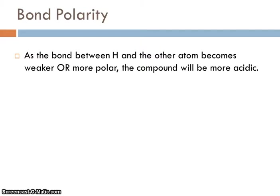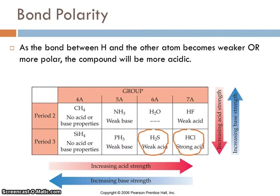One of the important things that affects the strength of an acid is the polarity of the bond between the hydrogen and whatever it's attached to. As that bond becomes either weaker or more importantly more polar, the compound is going to end up being more acidic. If we look at H2S and HCl, the H-S bond is not as polar as the H-Cl bond. H2S is a weak acid; HCl is a strong acid. So we can use these simple kinds of comparisons to predict which substance will be a stronger or weaker acid.